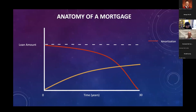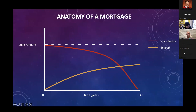When you pay off your mortgage, there are going to be two components to your payments. The first is this orange line here — that is interest. Every month when you pay your lender, a part of that payment is going towards interest. That interest is actually quite high early on in the mortgage, and then the pace of it starts to decrease later on.